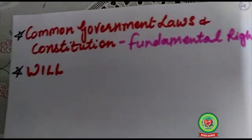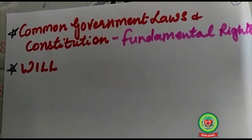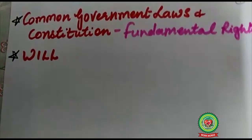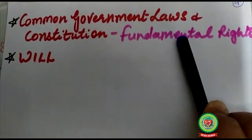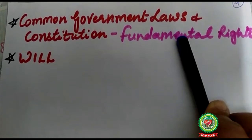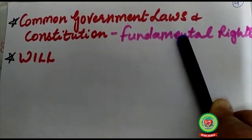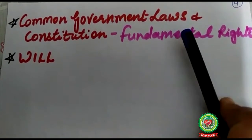The next factor is common government and laws. Living under the same constitution and laws, enjoying the same fundamental rights and freedoms, and enjoying the right to vote — all these tie us together. This factor also gives birth to nationality and is a very important factor which gives rise to nationality.